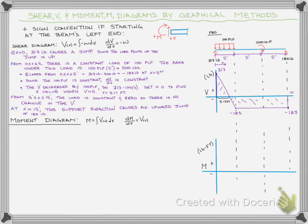So that first triangle is from zero to 3.17 feet. It is positive, and since we're just summing up areas, that means we're adding to our moment — it's going to create positive moment. And the magnitude of the shear is decreasing: we start at 317 and we end up at zero for the magnitude of the shear. So that means our shear is decreasing — what does that tell you about our slope?